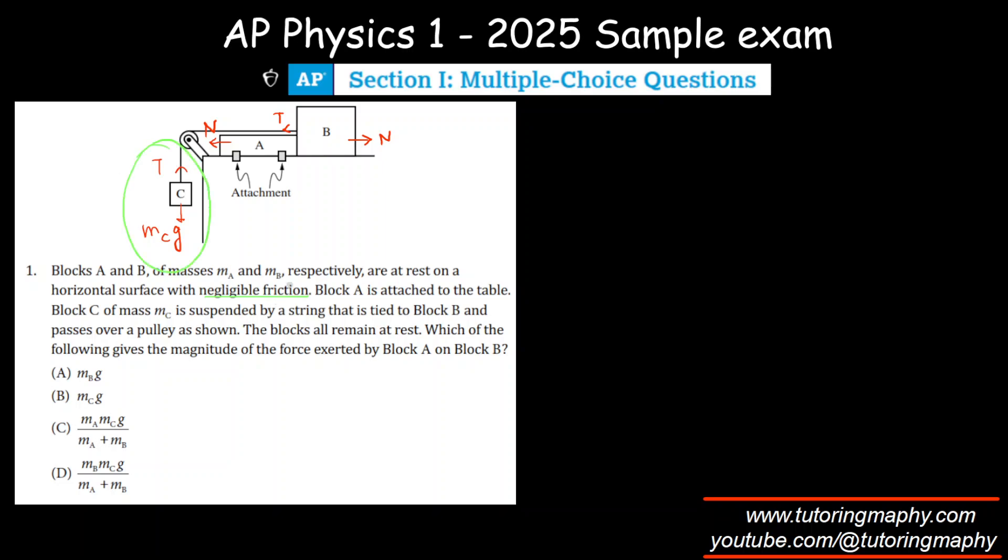All right. Let's equate these forces because the system is at rest. All the forces should cancel out each other. So if I talk about C, then tension should be equal to MCG. That's one. If I talk about B, the tension should be equal to the normal reaction that we are supposed to find. Remember, there is no friction.